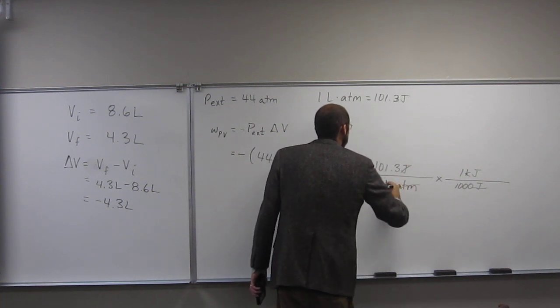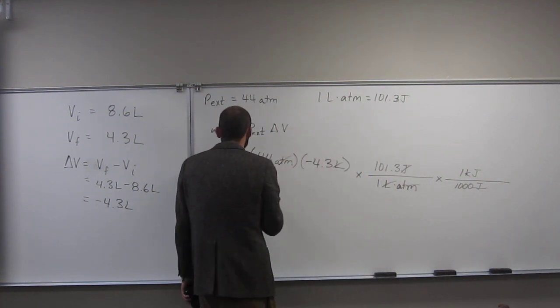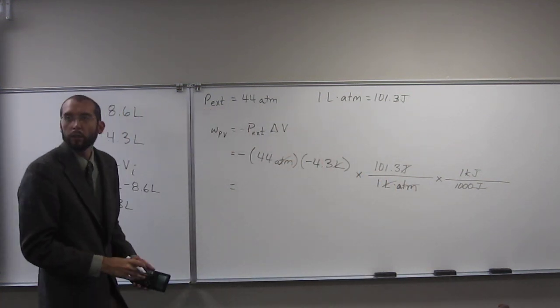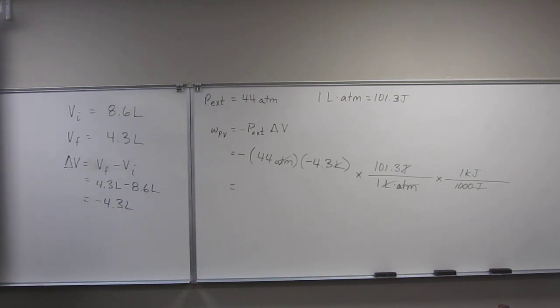So cancel, cancel, cancel... And that should give us in kilojoules, right? So let's just do it. So negative 4.3 times negative 44 times 101.3 divided by 1000.